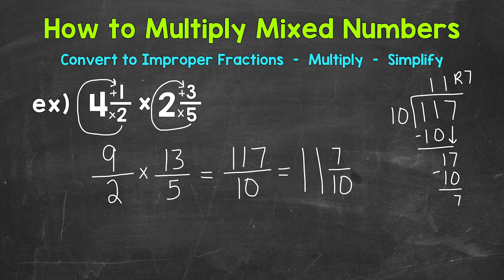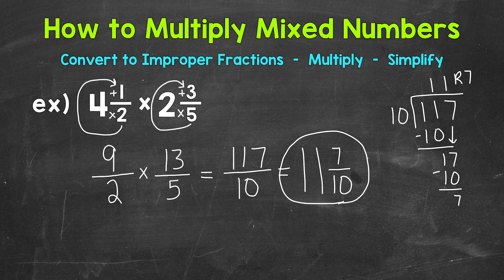Always check to see if you can simplify the fractional part of a mixed number. Well, 7 tenths is in simplest form. The only common factor between 7 and 10 is 1. So this is in simplest form and we are done. 11 and 7 tenths.